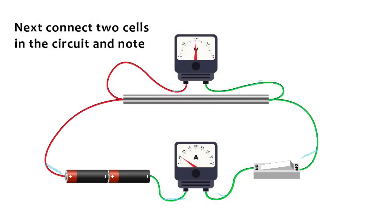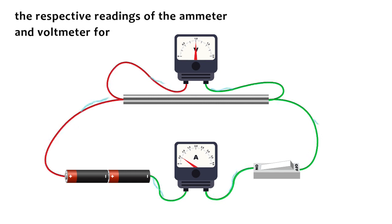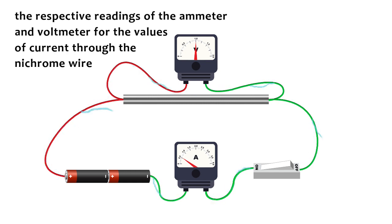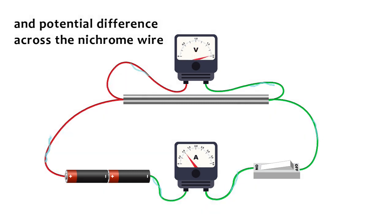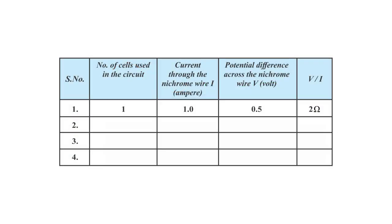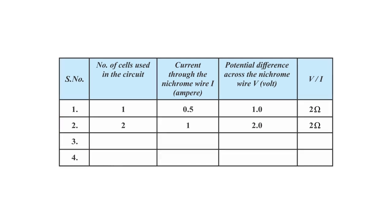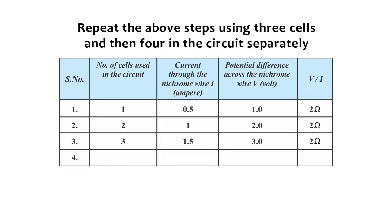Next, connect two cells in the circuit and note the respective readings of the ammeter and voltmeter for the values of current through the nichrome wire and potential difference across the nichrome wire. Repeat the above steps using three cells and then four in the circuit separately.